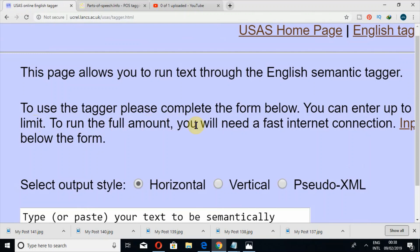To run the full amount, you will need a fast internet connection. It means if you have more than 100,000 words in your file and you want to tag all these words at once, you must have a fast internet connection.